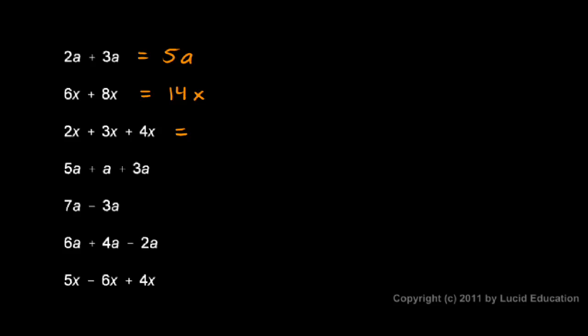2x plus 3x plus 4x. Well, we add the coefficients up here. The 2 and the 3 give me a 5, and then the 4 gives me a 9. So 2 of something plus 3 more of that thing plus 4 more of that thing gives me a total of 9 of those things. So 2x plus 3x plus 4x is 9x.